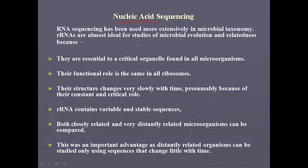A question arises: if we try to sequence the nucleic acid, what type of nucleic acid are we using — DNA or RNA? RNA sequence has been used most extensively in microbial taxonomy because RNA is essential to a critical organelle found in all microorganisms. We can find a common origin of RNA from evolutionary history, and that is the ribosome, which is made up of rRNAs.